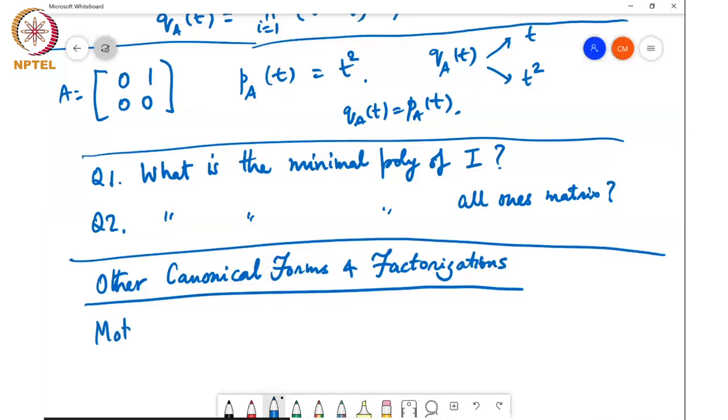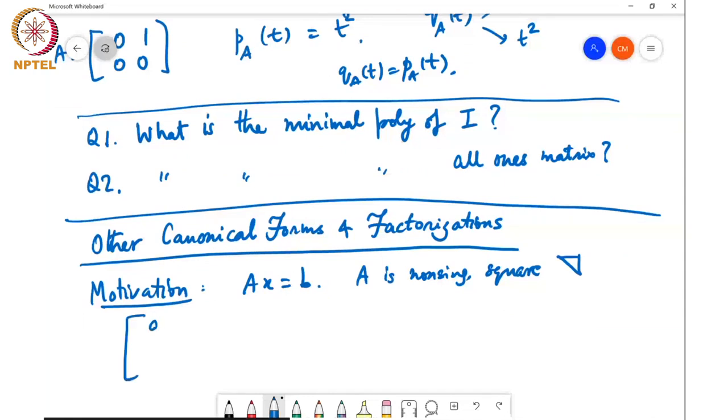So the motivation is that we want to solve Ax equals B and suppose A is non-singular and square and let's say it's upper triangular. Then what I can do is basically this system of equations is of the form A11 to A1N, ANN 0 times X1 through XN equals B1 to BN.